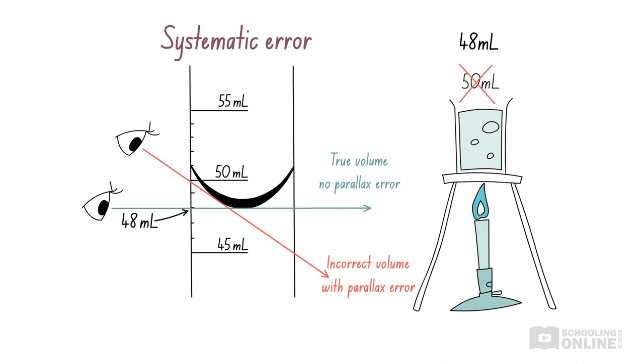Once again, our result is less accurate because it is higher or lower than the true value. In this case, because we use the instrument incorrectly.